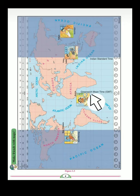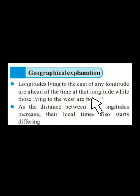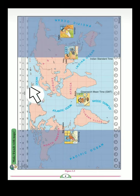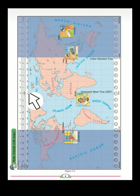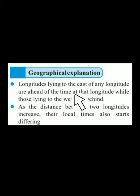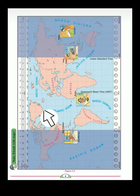Whenever the sun is at zero degree longitude, it is noon at that particular longitude. Longitudes lying to the east of any longitude are ahead in time, while those lying to the west are behind. For example, at 15° East it's 1 o'clock; at 30° East it's 2 o'clock; at 45° East it's 3 o'clock. Going west: at 15° West it's 11 o'clock, at 30° West it's 10 o'clock, and so on.